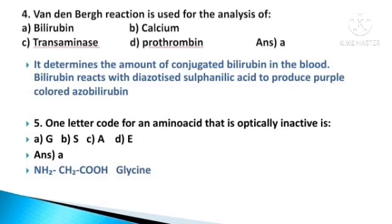The fifth question: One letter code for an amino acid that is optically inactive is — options: G, S, A, E. The answer is A, G — G for glycine. Glycine is the only amino acid which is optically inactive and it is the simplest amino acid, NH2CH2COOH.